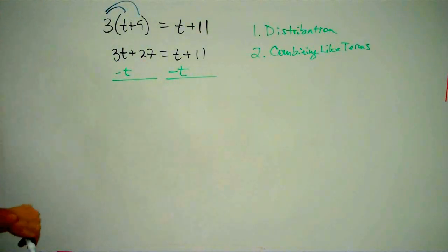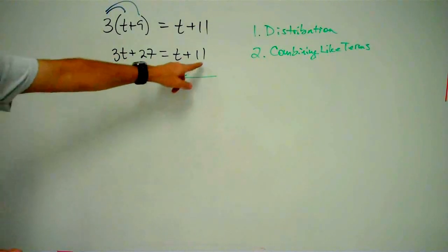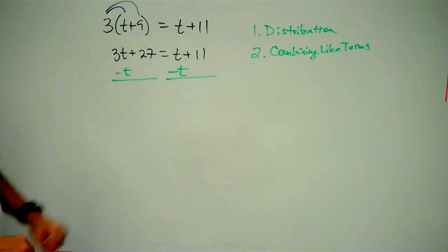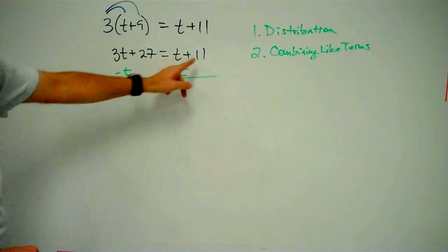Now, I want you all to notice, I didn't try to take the t from the 27. I didn't try to take the t from the 11. Why not? Because these are constant terms. They're not t terms. They're constant terms.